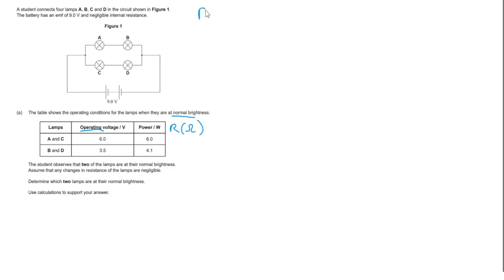We can use the given information of power and operating voltage and the formula power is V squared over R. Rearrange to give us R is V squared over P. Looking at bulb A, this gives us a voltage squared of six squared over six for the power, which gives us a resistance for bulb A and C of six ohms.